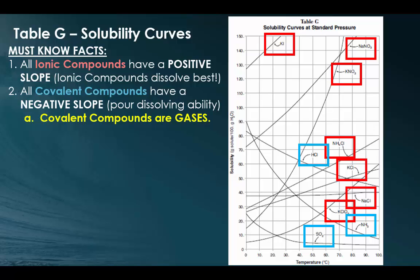All the covalent compounds have a negative slope. And these covalent compounds, which are all gases, we'll notice that they are going to have a decrease in solubility as temperature increases.